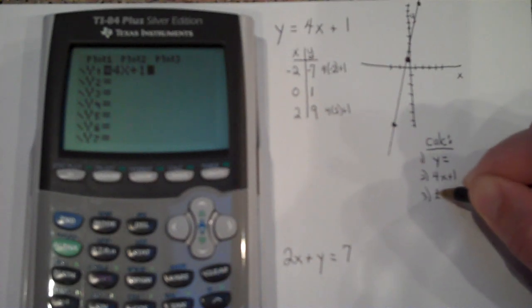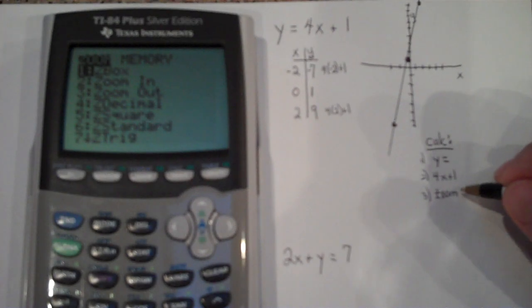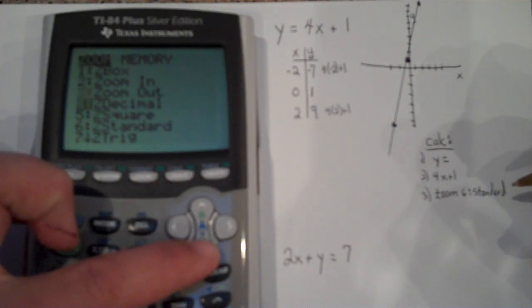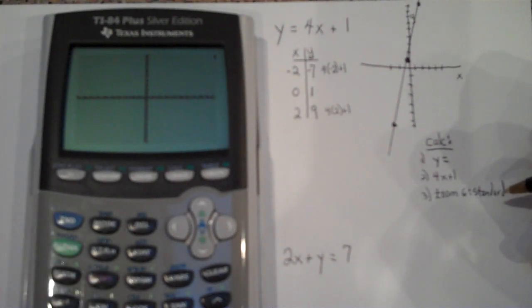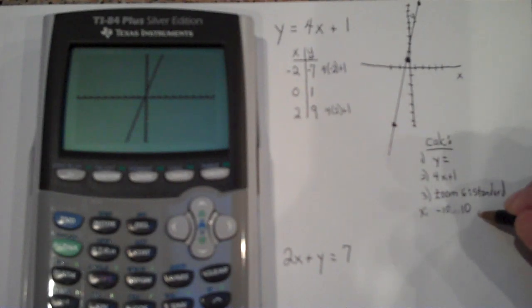Third step, I'm going to go ahead and hit the zoom, and I'm going to use zoom 6, which is the standard window. So I'm going to scroll down to zoom 6, and then I'm going to hit enter. And what that's going to do is graph on a standard negative 10 to 10 for X, and negative 10 to 10 for Y.